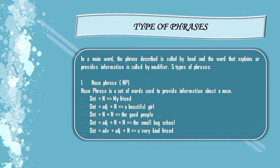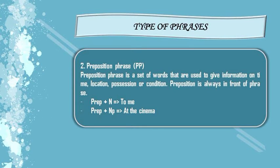The next pattern is determiner plus adjective plus a noun plus a noun — for example, 'the small black school,' where 'the' is the determiner, 'small' is adjective, 'black' is a noun, and 'school' is a noun. The last is determiner plus adverb plus adjective plus noun — for example, 'a very kind friend,' where 'a' is the determiner, 'very' is an adverb, 'kind' is adjective, and 'friend' is a noun. So, a noun phrase is a set of words used to find information about a noun.